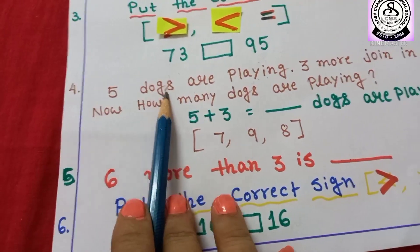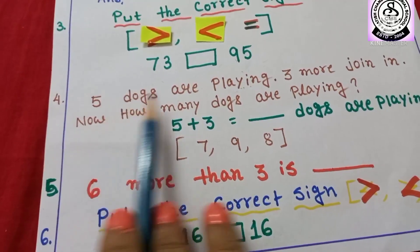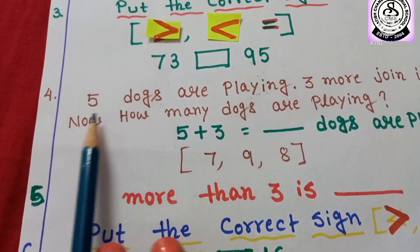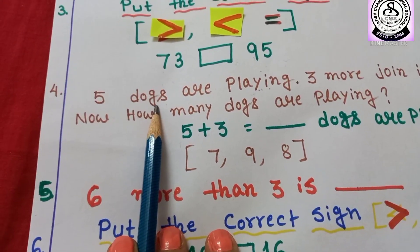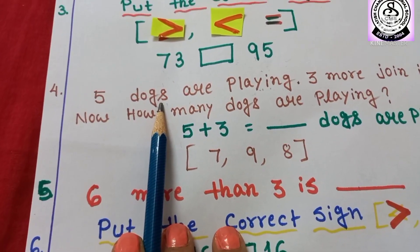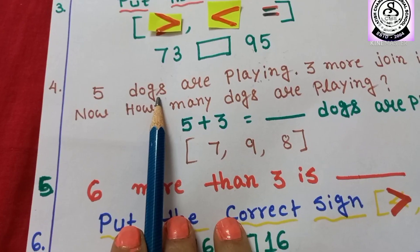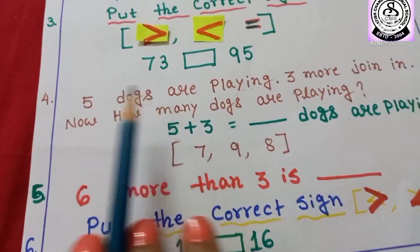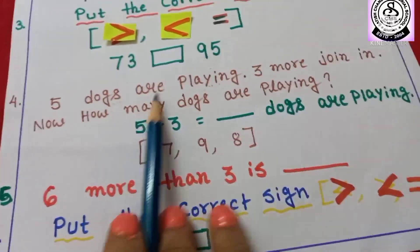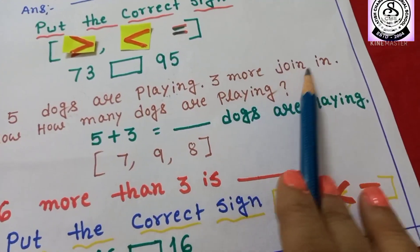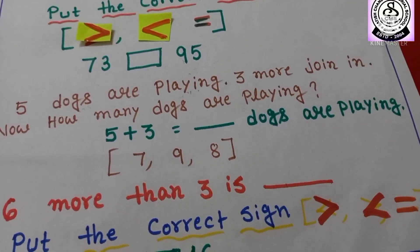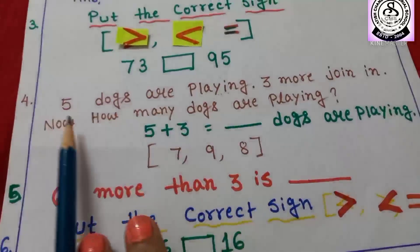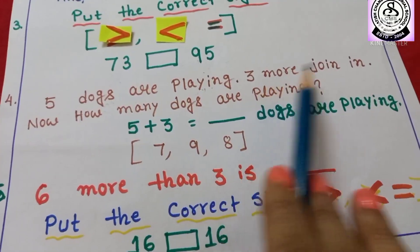Number 4: 5 dogs are playing. How many dogs? 5 dogs. Why 5 dogs and not 5 dog? When we are talking about more than one, we have to use S or ES. That's why 5 dogs are playing. 3 more join in. More means bigger number — you always have to count the bigger number.